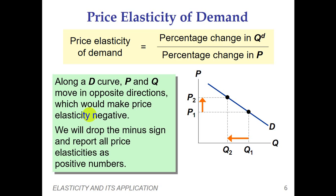Because price and quantity demanded have a negative relationship, after calculating price elasticity of demand you might get values with a negative sign. What you have to do is ignore the negative sign and consider it as a positive number — you take the elasticity in absolute terms.